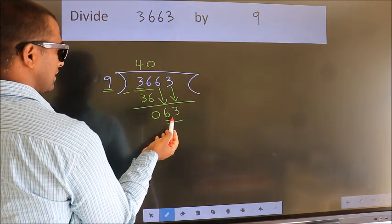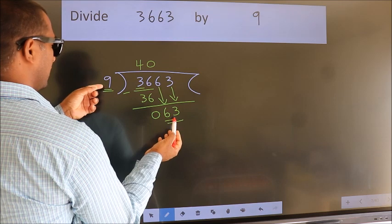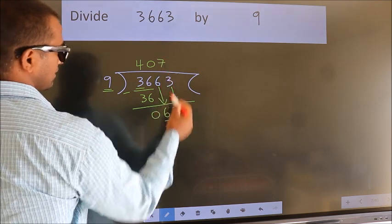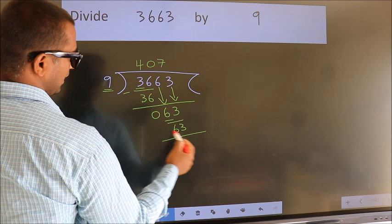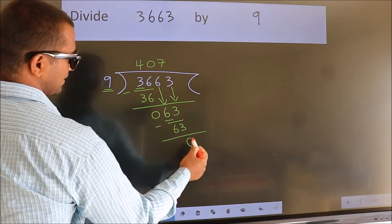When do we get 63 in the nine table? Nine sevens 63. Now we subtract. We get zero.